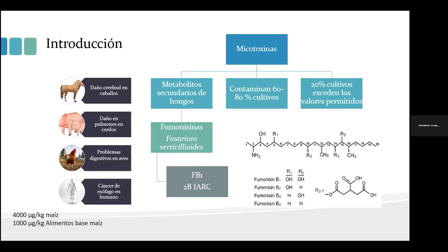La fumonicina B1 ha sido catalogada en el grupo 2B por la Agencia Internacional de Investigación en Cáncer, debido a los daños que puede producir en animales y humanos. Por ejemplo, en caballos produce daño cerebral, en cerdos daño pulmonar, en aves problemas del sistema digestivo, y aunque no está del todo documentado, se ha relacionado con cáncer de esófago en humanos.